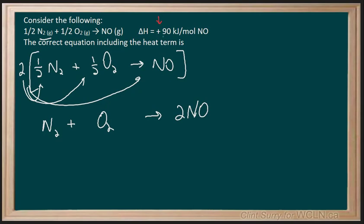I also see that this is 90 kilojoules per mole of NO, and we have two of them. So we're going to have to multiply that value by 2, and it becomes positive 180.